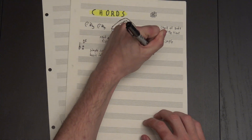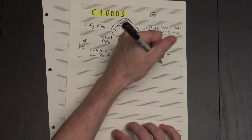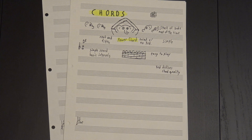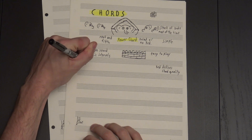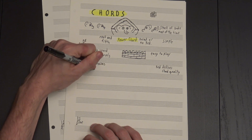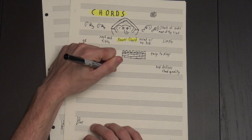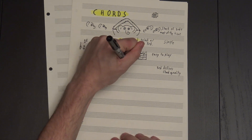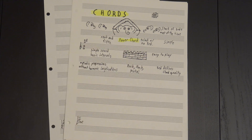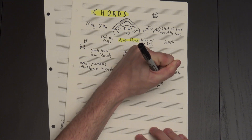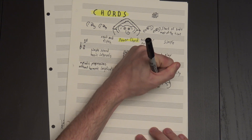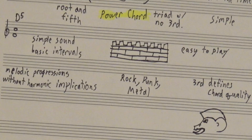It provides a massive wall of consonance and stability. It's also really easy to play on most instruments, and because the third is so important to chord quality, it lets you write more melodic progressions without really worrying about the harmonic implications. Power chords are used heavily in rock, punk, metal, and any other style where riffs are more important than complex harmonies.